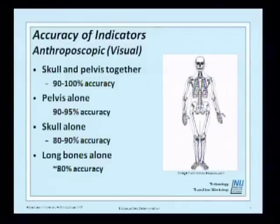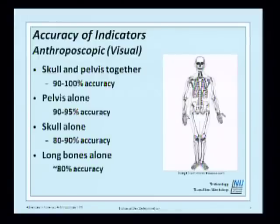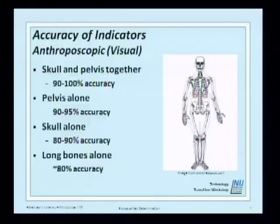With our visual indicators, the skull and pelvis together can provide fairly great accuracy — 90 to 100%. The pelvis alone would be better than the skull because of the morphological differences related to bearing children. The skull alone can also provide fairly great accuracy. As we go down to the long bones, accuracy decreases considerably.